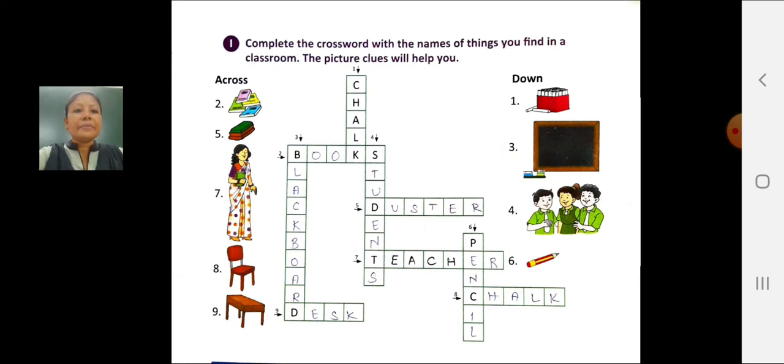Third picture is blackboard. Then write in the crossword third number, B-L-A-C-K-B-O-A-R-D, blackboard. Fourth picture is students. Then write in the crossword fourth number, S-T-U-D-E-N-T-S, students.